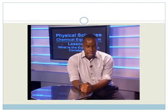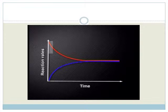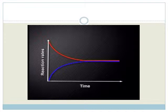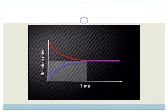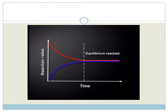Let's see what these graphs tell us. For the first graph of rate versus time, the rate of the forward reaction is high at the start but decreases after a while. At the same time, the rate of the reverse reaction starts from zero and then increases. After some time, the rate of the forward reaction is equal to the rate of the reverse reaction. The system is now in a state of chemical equilibrium.